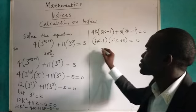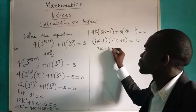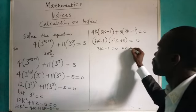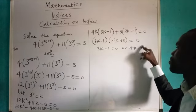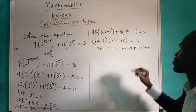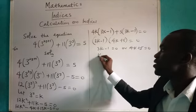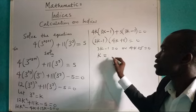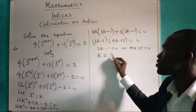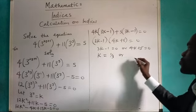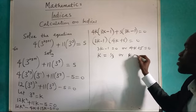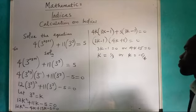Simply means that 3k minus 1 equals 0, or 4k plus 5 equals 0. For this one, I can make k the subject, become k equal 1 over 3, or for this one I have k equal minus 5 over 4.